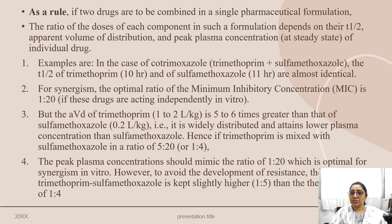The half-life of trimethoprim is 10 hours and sulfamethoxazole is 11 hours — almost identical. For synergistic effect, the optimal ratio of the minimal inhibitory concentration is 1:20 when these drugs are given independently in vitro.